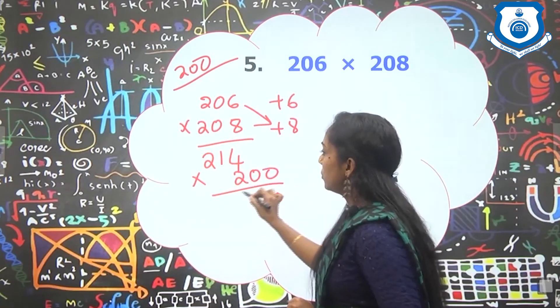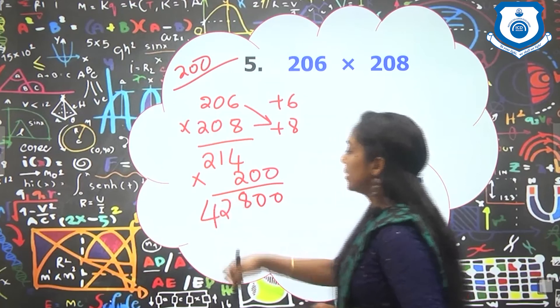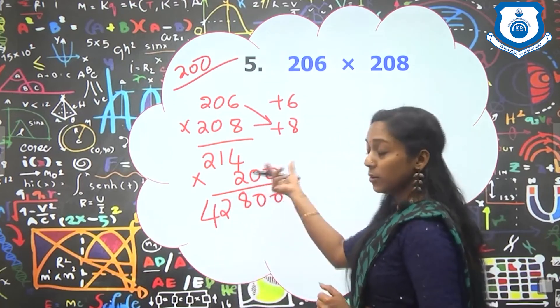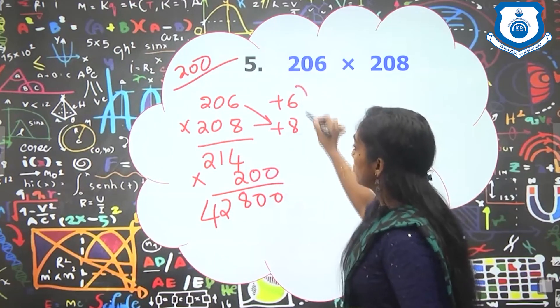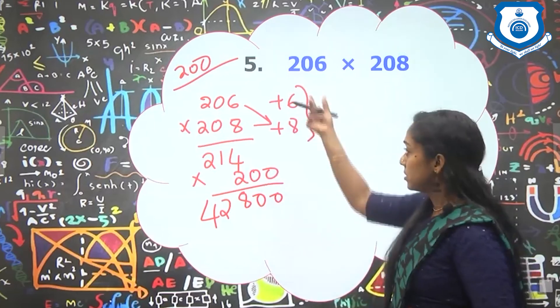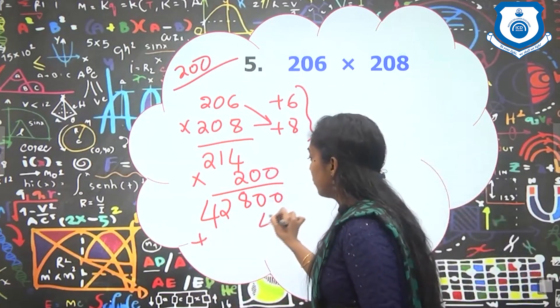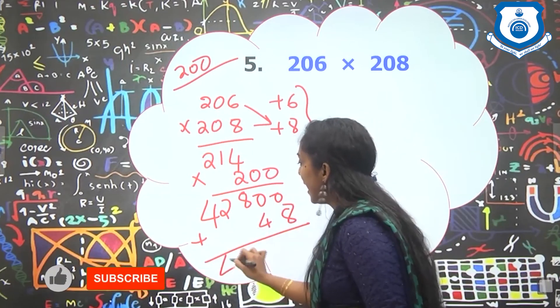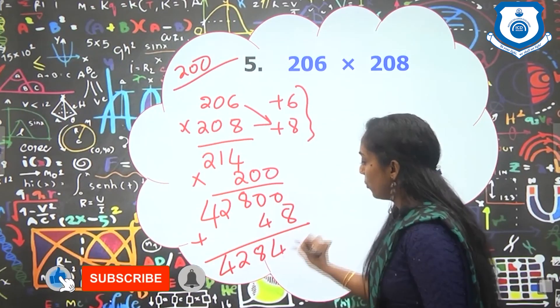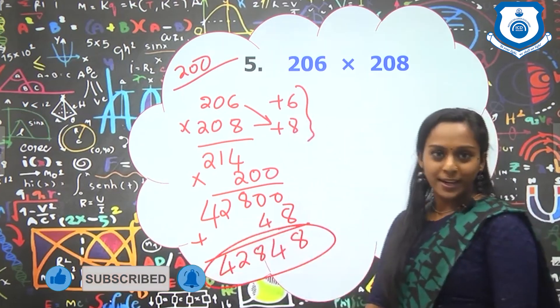So into 200. So here is 0, 0, 8, 2, 4. Now to this, only to this number, you have to add the product of these numbers. Plus 6 into plus 8 is plus 48. So this is plus 48. And so you will get the answer as 4, 2, 8, 4, 8. So the answer is 42,848.